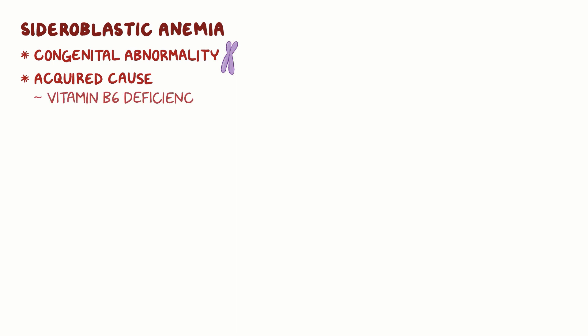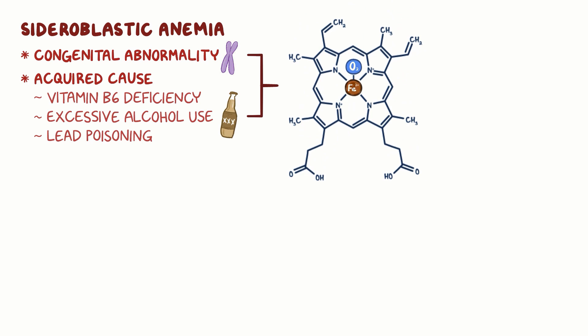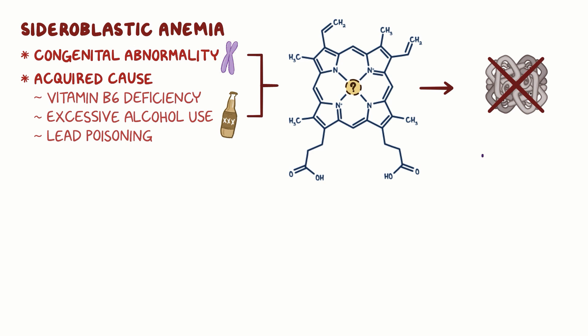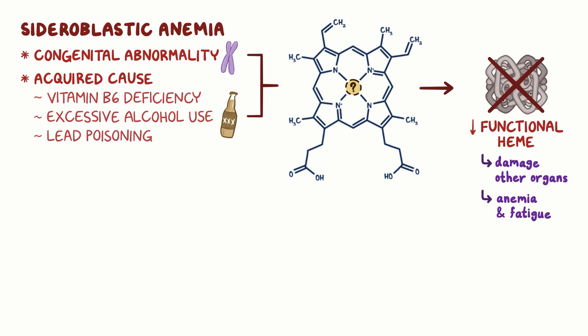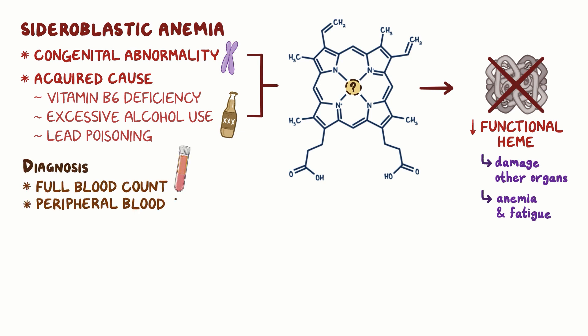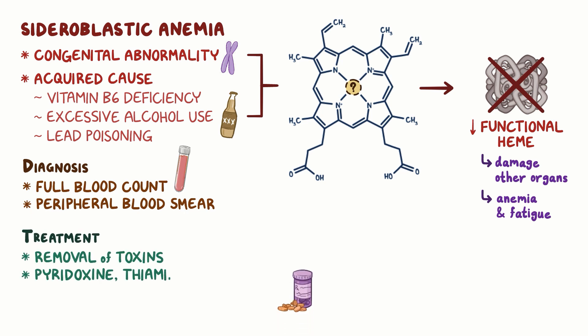As a quick recap, sideroblastic anemia happens when there's either a congenital abnormality or an acquired cause like vitamin B6 deficiency, excessive alcohol use, or lead poisoning, which leads to an inability to incorporate iron to form heme. The overload of iron that's unable to be incorporated into RBCs can damage other organs. The lack of functional heme results in anemia and fatigue. For diagnosis, a full blood count and peripheral blood smear should be performed. Treatment involves removal of toxins and administration of pyridoxine, thiamine, and folic acid.